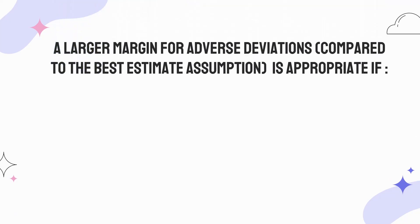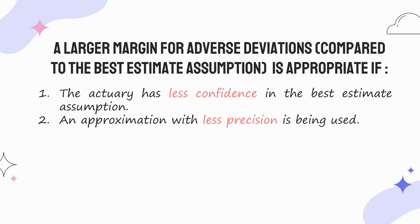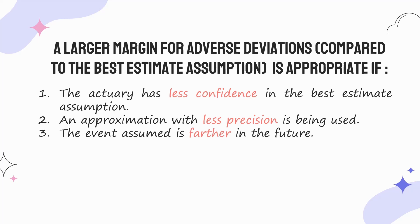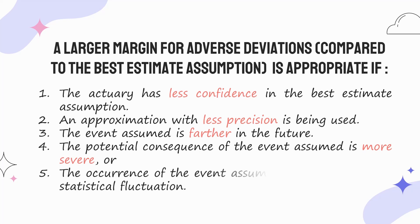Ten, be consistent with regulatory solvency and other objectives. Eleven, be consistent with IASB objectives. A larger margin for adverse deviations compared to the best estimate assumption is appropriate if: one, the actuary has less confidence in the best estimate assumption; two, an approximation with less precision is being used; three, the event assumed is farther in the future; four, the potential consequence of the event assumed is more severe; five, the occurrence of the event assumed is more subject to statistical fluctuation. A smaller margin of adverse deviations is appropriate if the opposite of the above is true.